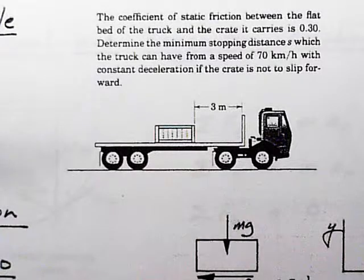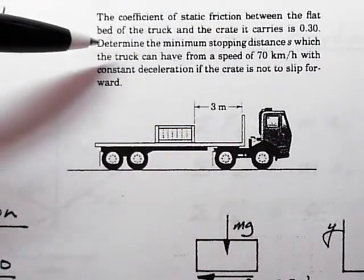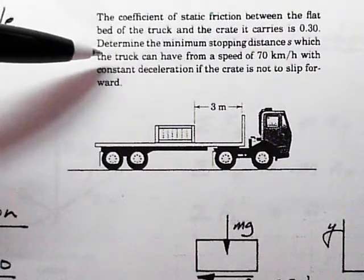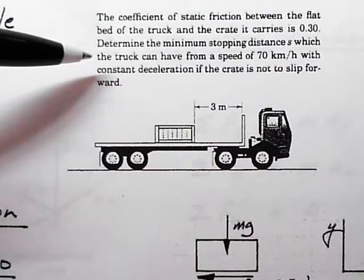The coefficient of static friction is 0.3. We need to determine the minimum stopping distance s which the truck can have from a speed of 70 kilometers per hour with constant deceleration if the crate is not to slip forward.